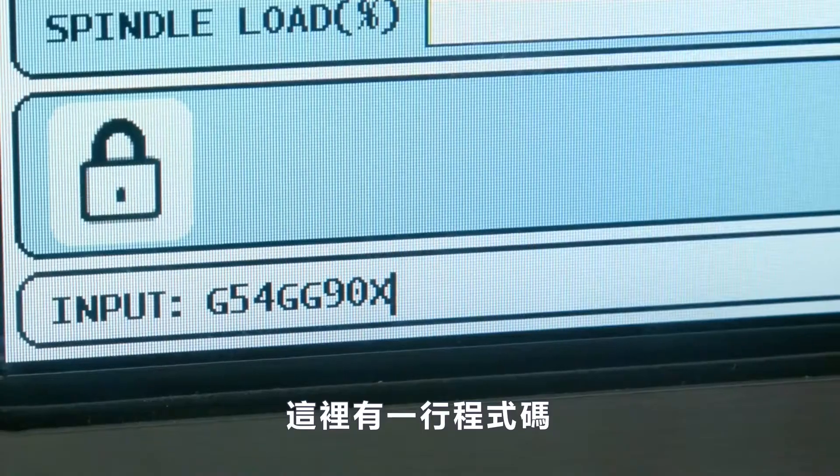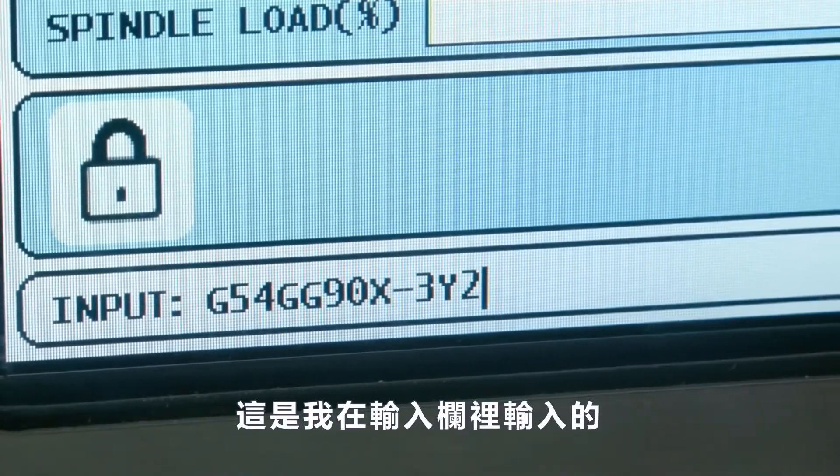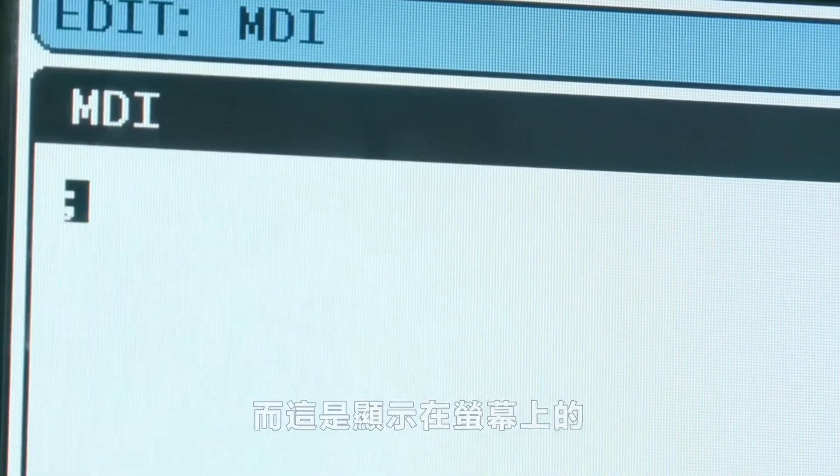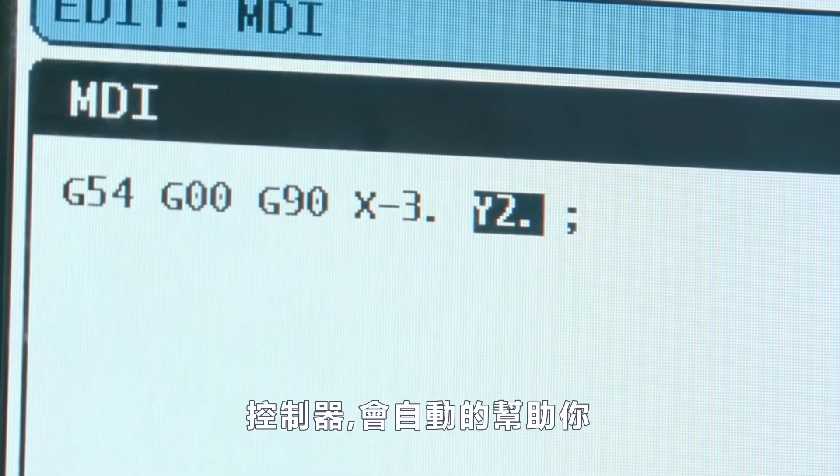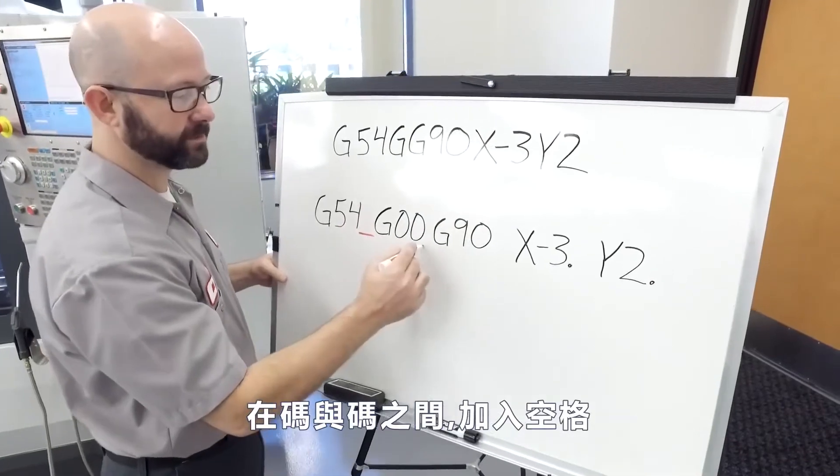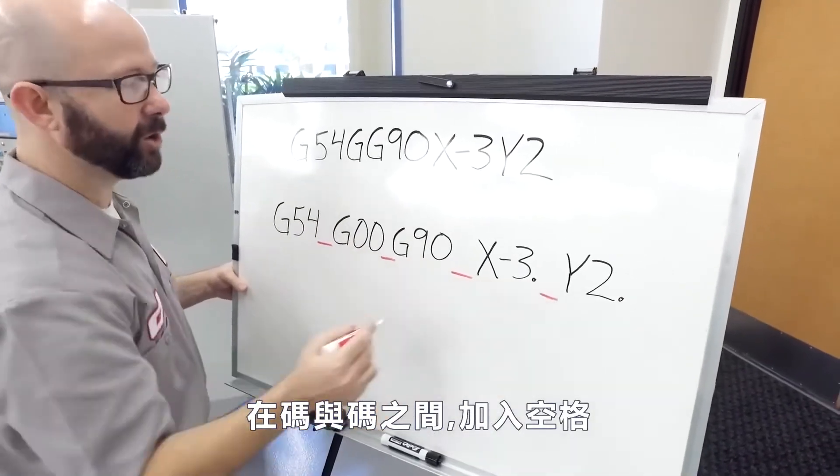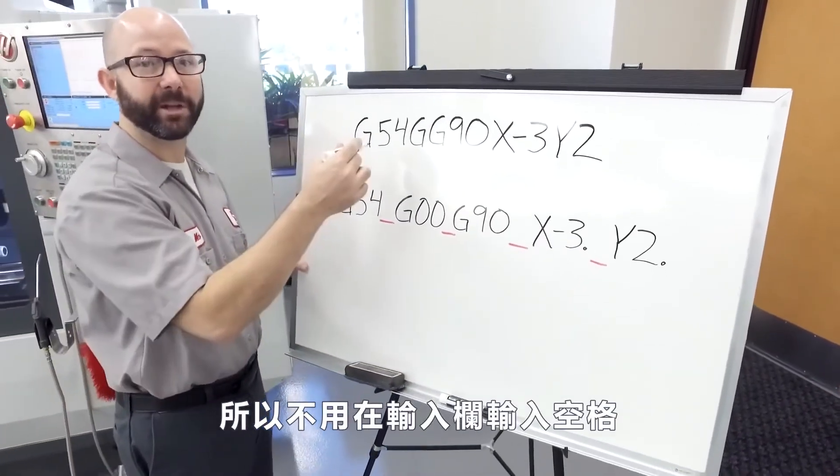Here is just one line of code from my program. This is what I entered on the input line. This is what showed up on my screen. The control automatically adds the spaces for us in between our codes, so there's no reason to add them onto the input line.